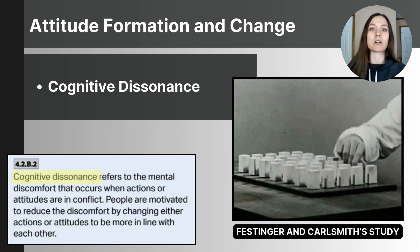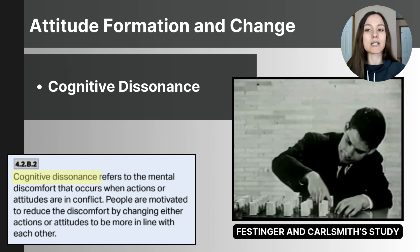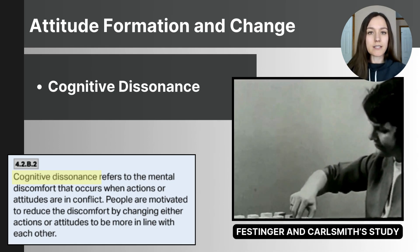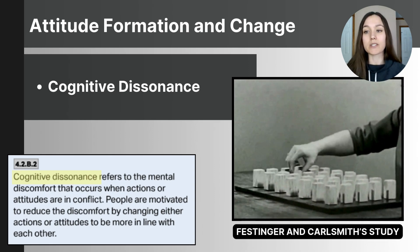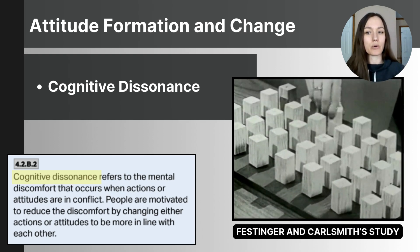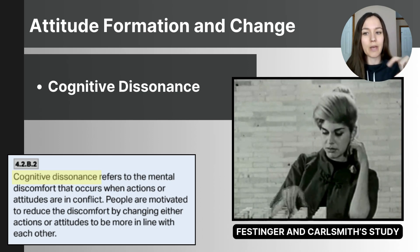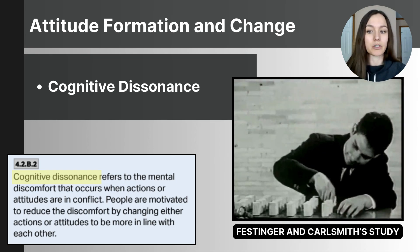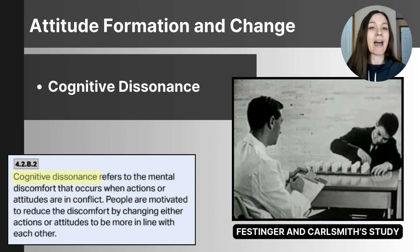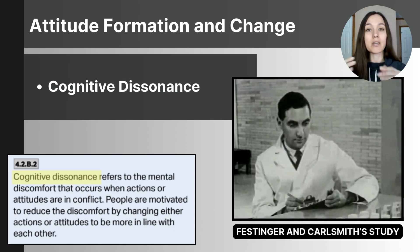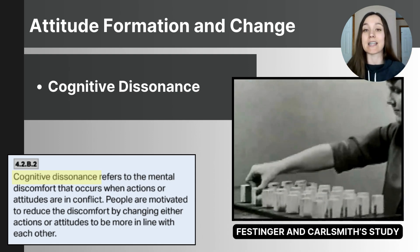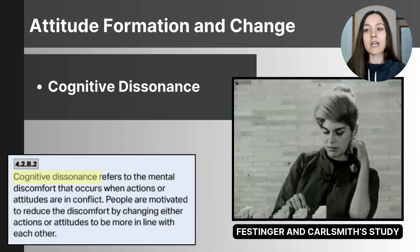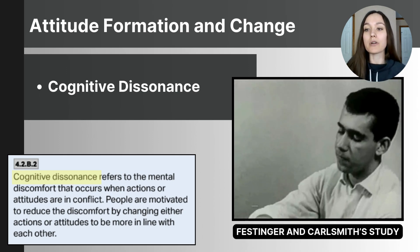One of the most famous studies on cognitive dissonance was conducted by social psychologist Leon Festinger in 1957, known as the Festinger and Carlsmith study. Participants were asked to perform a boring task — turning pegs on a board over and over for a very long period of time. Then they were asked to tell another person how enjoyable the task was. Some participants were paid one dollar to lie, while others were paid twenty dollars to lie.